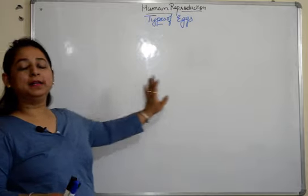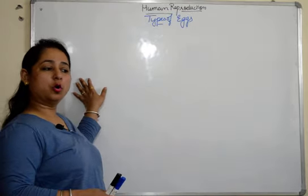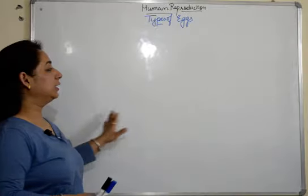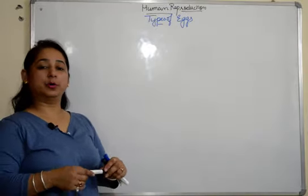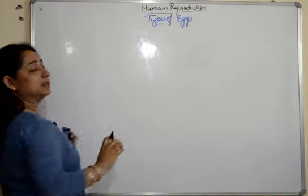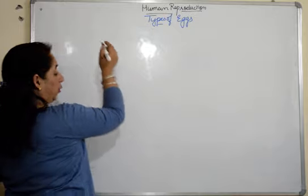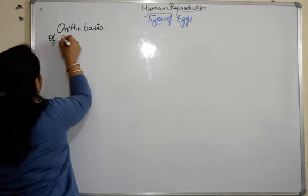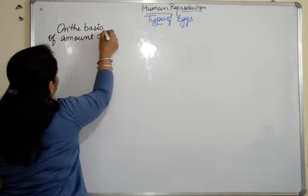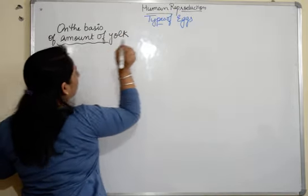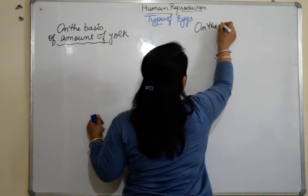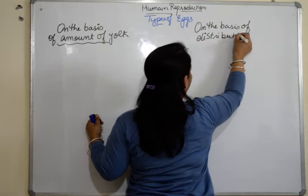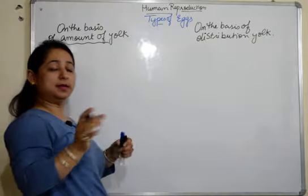I will be discussing the two main types of eggs: one on the basis of amount of yolk present, and the other on the basis of distribution of yolk — that means how the yolk is distributed in the egg. Watch the video till the end; at the end you will get everything on the board so you can note down the pointers for your notes.